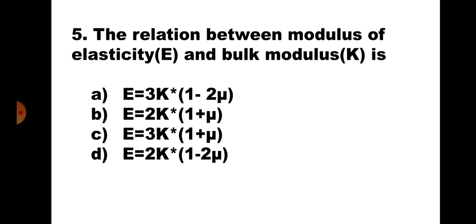Question number 5. The relation between modulus of elasticity E and bulk modulus K is: A. E = 3K(1 − 2μ), B. E = 2G(1 + μ), C. E = 3G(1 + μ), D. E = 2G(1 − 2μ). The correct relation between E and K is E = 3K(1 − 2μ).